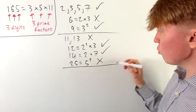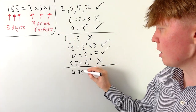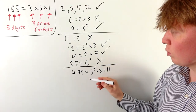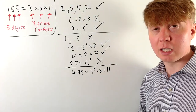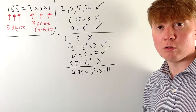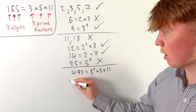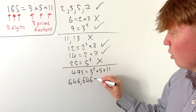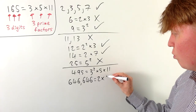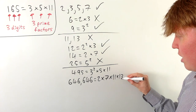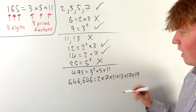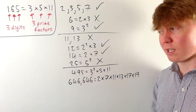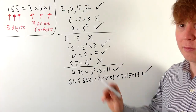We can make larger examples: we've seen 165, and we could also look at 495, which is 3 squared times 5 times 11. This works because it's got three digits and three distinct prime factors — we don't count the repeated 3. An even bigger example is 646,646, whose prime factorization is 2 times 7 times 11 times 13 times 17 times 19. That's six digits and exactly six distinct prime factors.